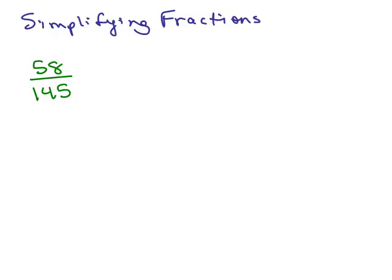So the other method I went over was prime factoring each number. Let's do that. 58, if you find the prime factorization, it's even, so you know it's 2 times something, and in fact it's 2 times 29.